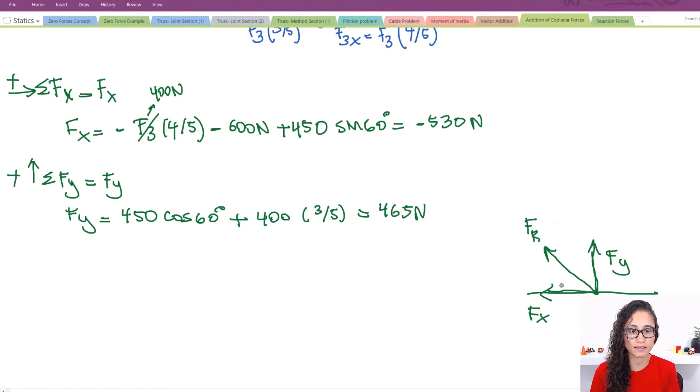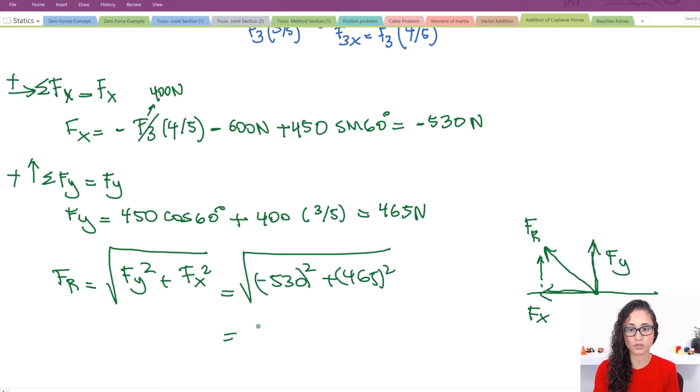So if I want to calculate this, we do Fr is equal to the square root of Fy squared plus Fx squared. So that would give me my hypotenuse, this vector right here. So let's plug in those numbers. So I have minus 530 squared plus 465 squared. So this is your Fx, this is Fy. So this is equals to 705 newtons. So this is your resultant force.